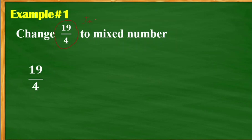This would be an improper fraction. We're going to make this one a mixed number. How do we change this into a mixed number? First, we're going to divide 19 by 4. So 19 divided by 4: how many? We have 4. 4 multiplied by 4, the answer is 16. Then subtract. We have 19 minus 16. The answer is 3. So we have a remainder of 3.